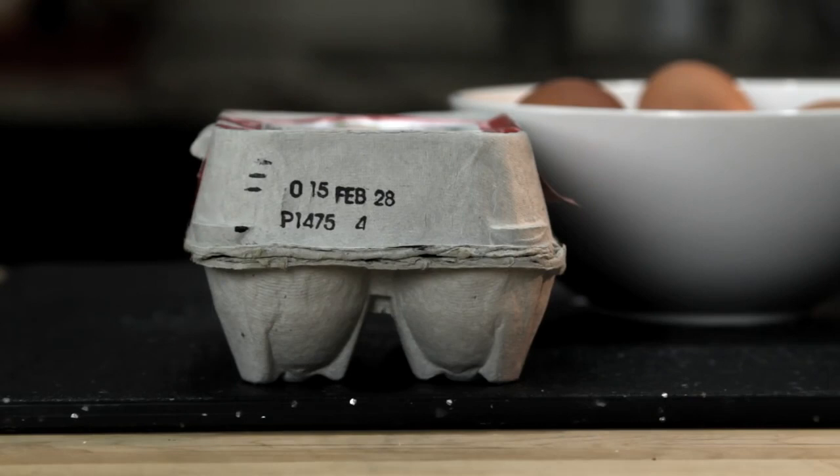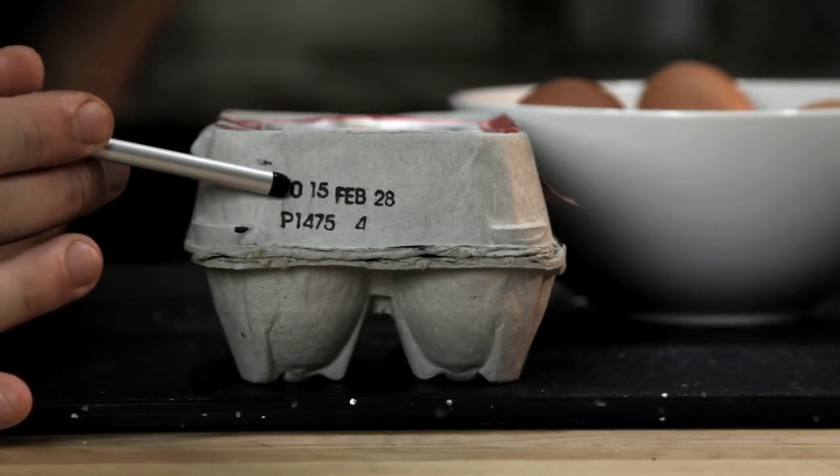There are two ways to tell how fresh an egg is. The first is to check something called the Julian date. As long as it's packed in the U.S., every carton of eggs has a number between 000 and 365 on it, and that number corresponds to the day on which the egg was cleaned and packed.